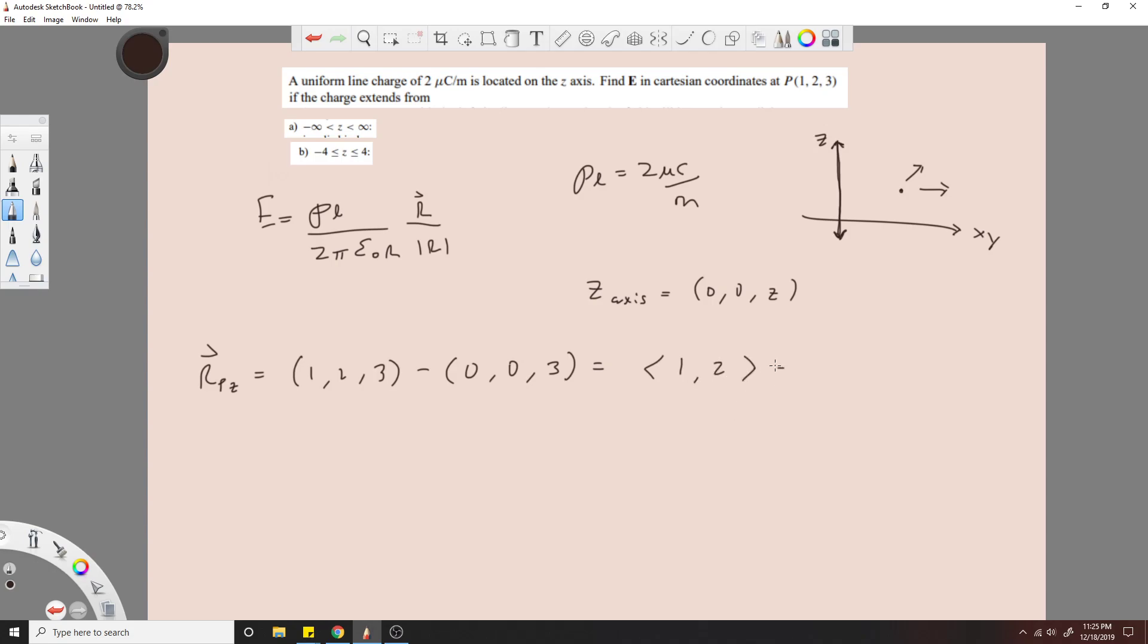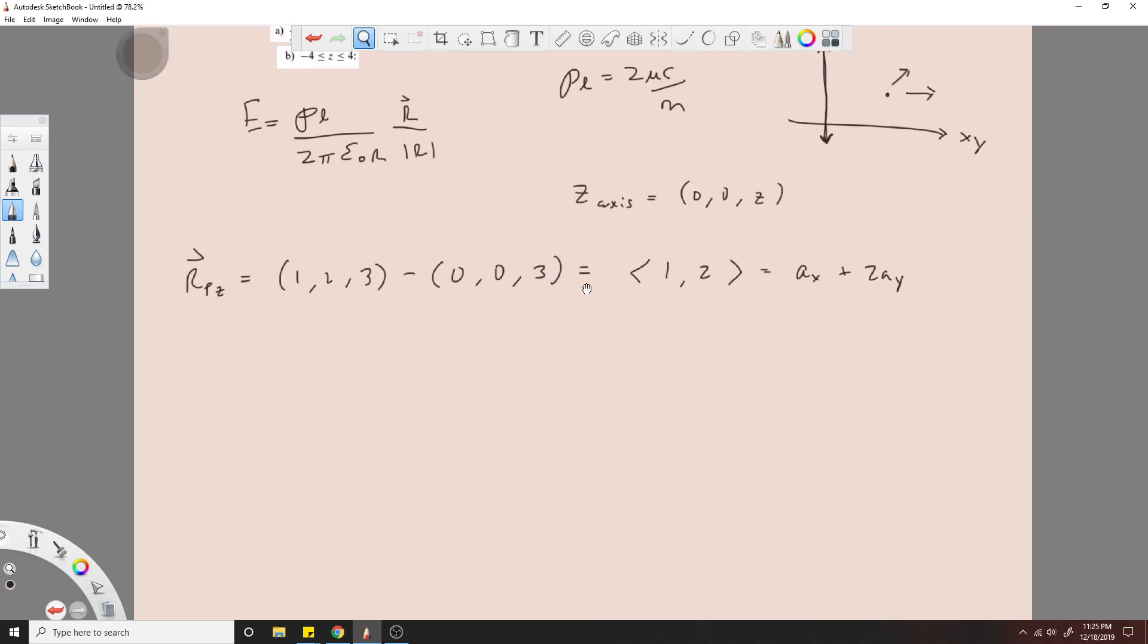I'll try it like that. And the book does this notation, ax plus 2ay, same thing. Okay, so now you just plug in your values. Plug this in. We'll call this R squared. So I'll plug in this squared, that notation's a little funky, but this squared is just going to look like 1 squared plus 2 squared squared.